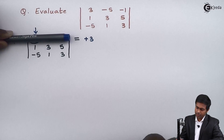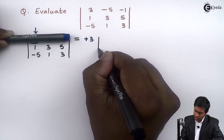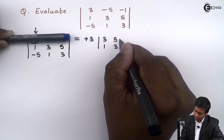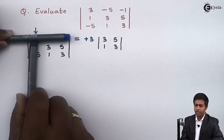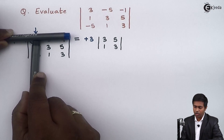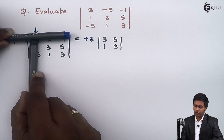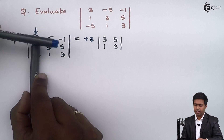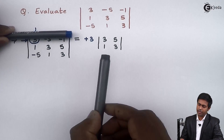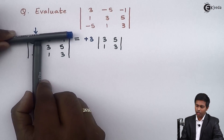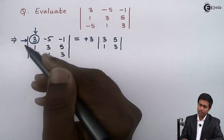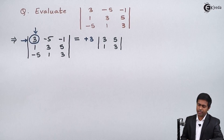So we get the determinant with elements 3, 5, 1, 3 — keeping the order unchanged: 3 and 5 in the first row, and 1 and 3 in the second row. Moving further, let's take the second element, which is -5.